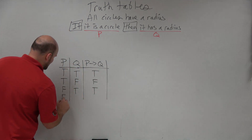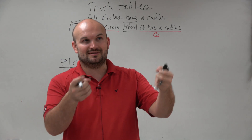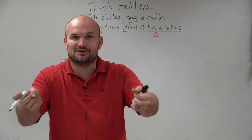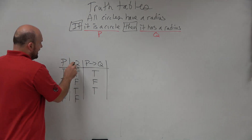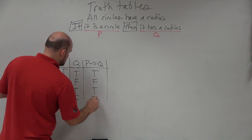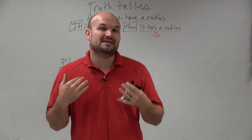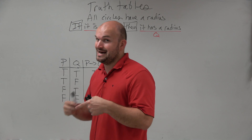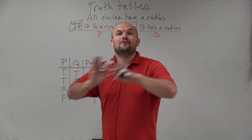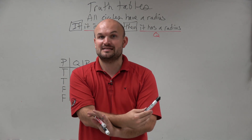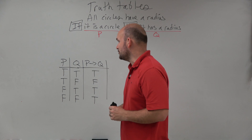The last case: if you take a square and say it's a circle but it doesn't have a radius — that's actually a true statement, because it isn't a circle and it doesn't have a radius. So if you have a false hypothesis and a false conclusion, the statement is also true. The only time a conditional statement is false is when the hypothesis is true but the conclusion is false. Everything else, your conditional statement is true.